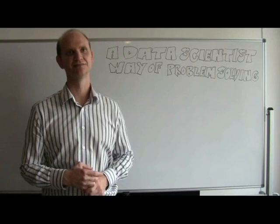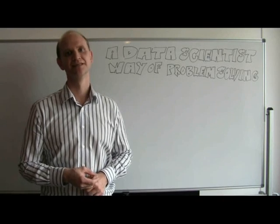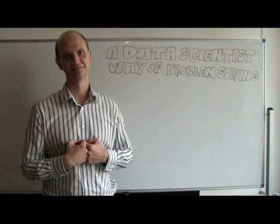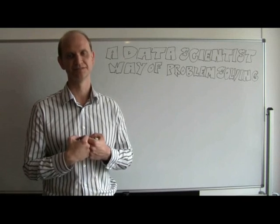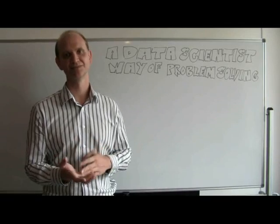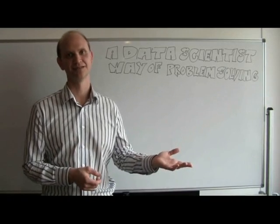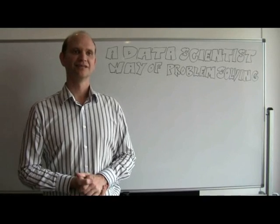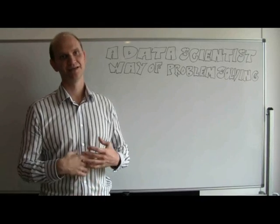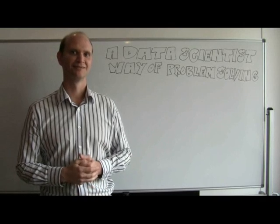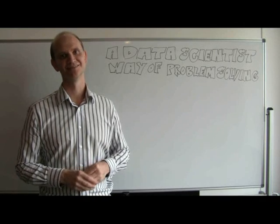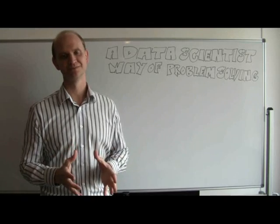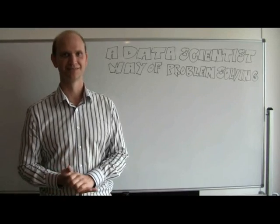So in essence, there are two types of problems that exist in the world. The first is problems that you find — problems that are yours. And the second type is problems that are other people's, and they want to give them to you to solve. The key — the secret and the trick — to a data scientist's way of problem solving is to convert all your problems into other people's problems.